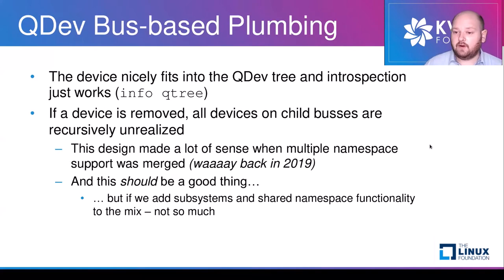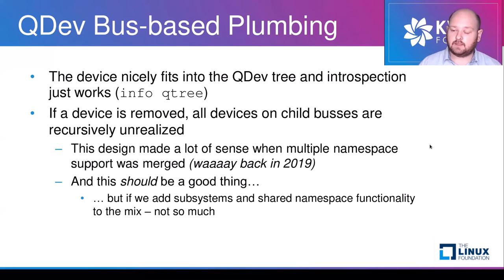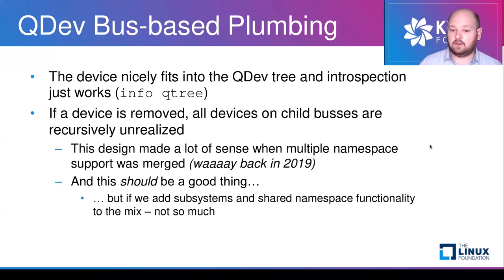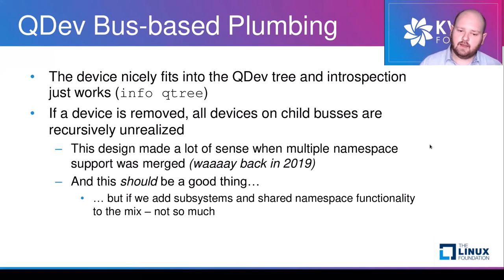This was very nice because it fits into the QDev tree, and introspection just worked — typing 'info qtree' in the monitor gave a nice tree with namespaces underneath controllers as children, along with all parameters. When the device was removed or hot-unplugged, children on the device would be automatically unrealized, so everything would clean up by itself, and it all made sense when we introduced this. But when we added more advanced features like subsystems and shared namespace functionality, this automatic cleanup became a problem.